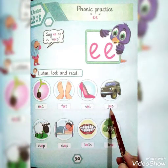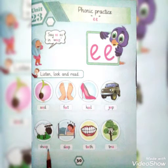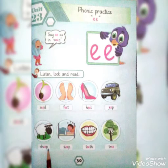Okay students. J-E-P: Jeep. Jeep کہتے ہیں — type of car ہے۔ Okay students. S-H-E-P: Sheep. Sheep کہتے ہیں بھیڑ کو۔